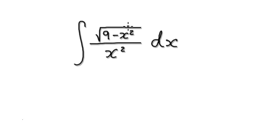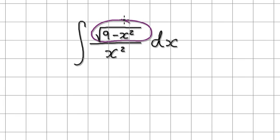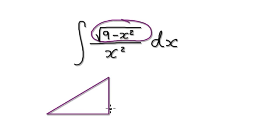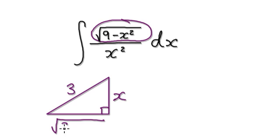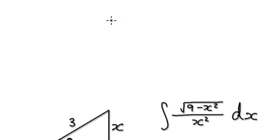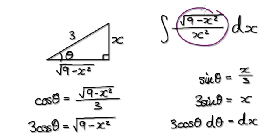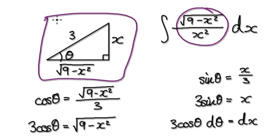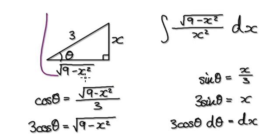To do this, your eyes should zoom into the complicated square root part and then somehow create a triangle such that this is true. If you make the hypotenuse to be 3 and the opposite to be x, then the adjacent has no choice but to be √(9 − x²). Create your triangle in such a way that this is true.